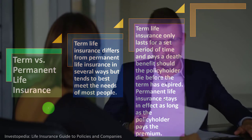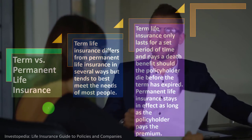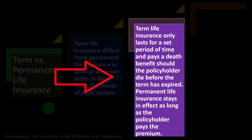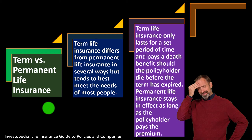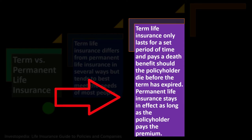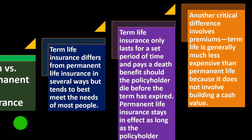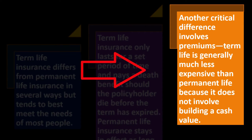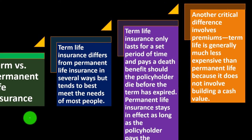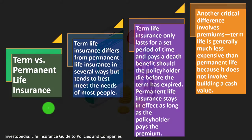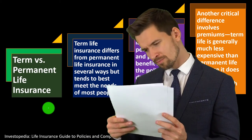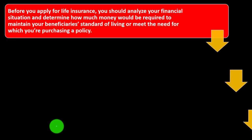Term life insurance only lasts for a set period of time and pays a death benefit should the policyholder die before the term has expired. You can set a fairly accurate term for the part of life when people might be dependent on your income. Permanent life insurance stays in effect as long as the policyholder pays the premium. Term life is generally much less expensive than permanent life because it does not involve building a cash value — you're just buying life insurance, which is straightforward.